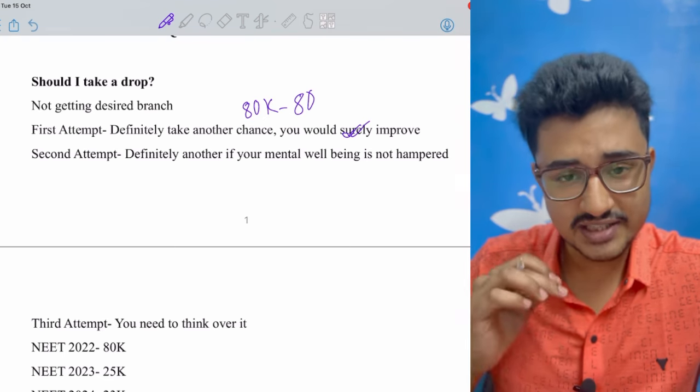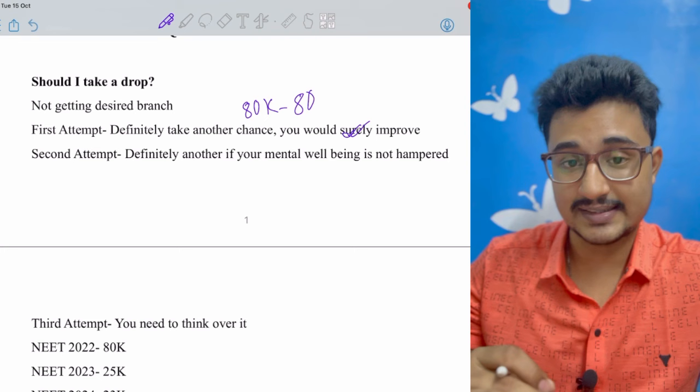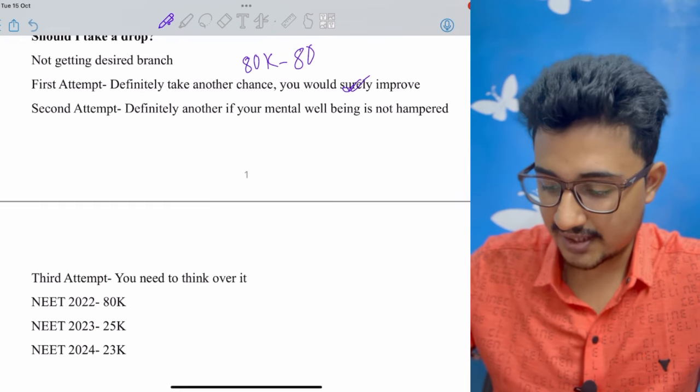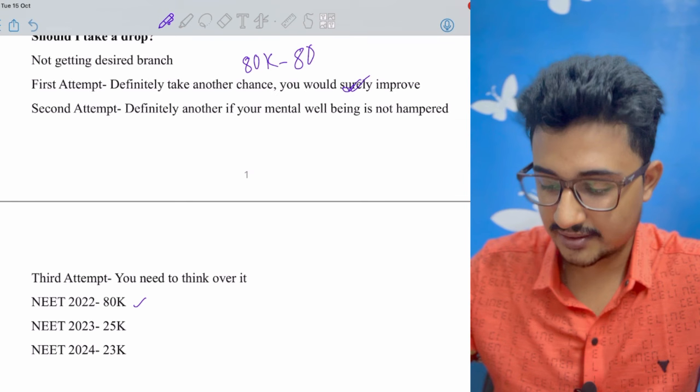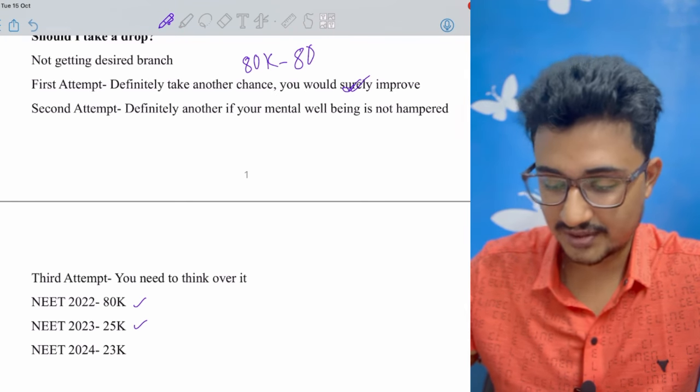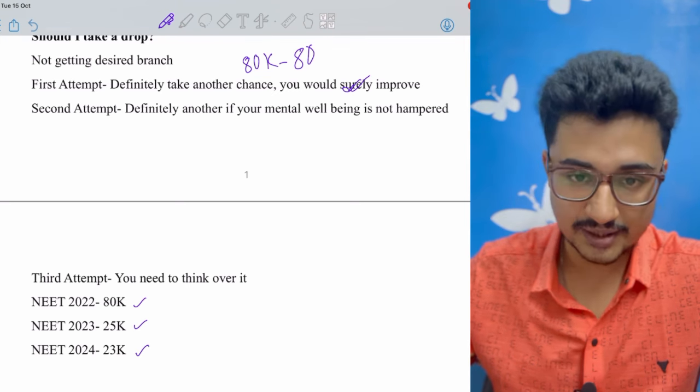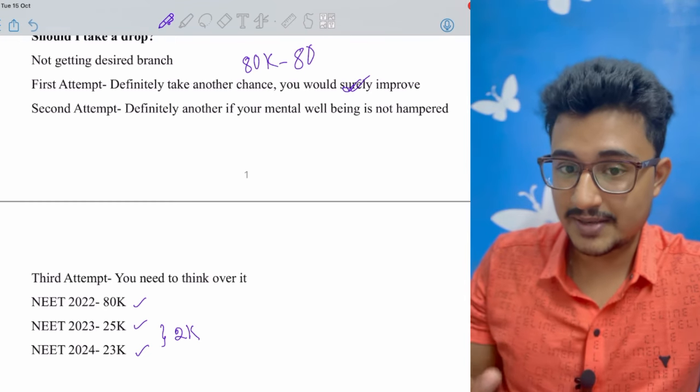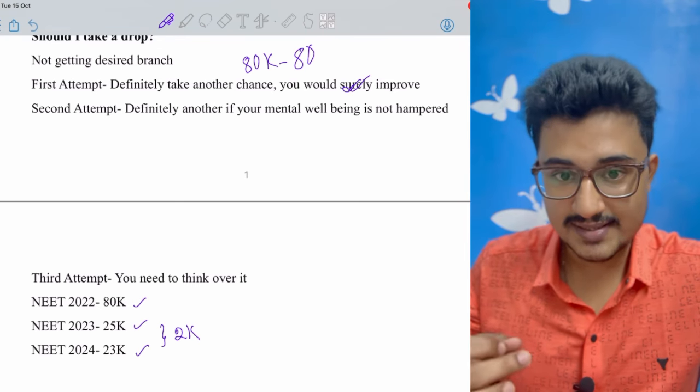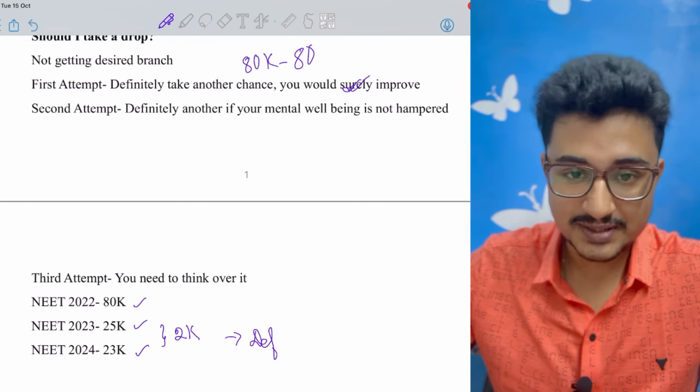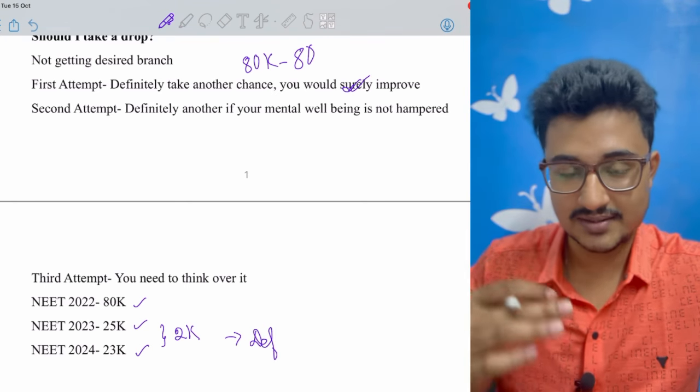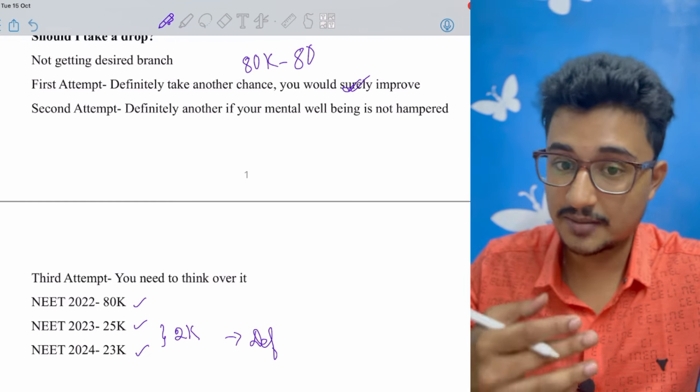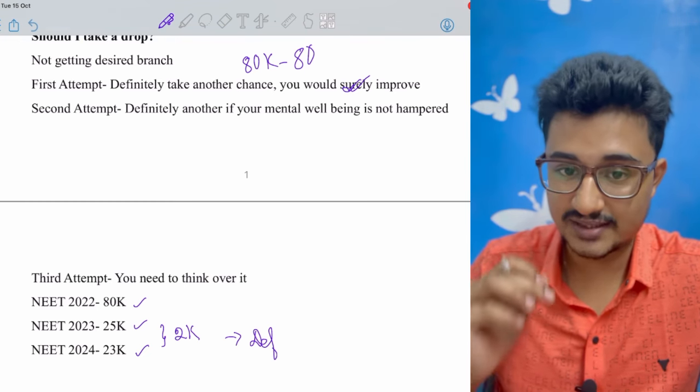If it is your third attempt, it is better that rather than giving drop you take a seat in one of the good clinical streams or any good streams. For example, if in 2022 your rank was 80,000, then 2023 there is massive improvement to 25,000, and this year you have a rank of 23,000 - so here there is only an improvement of 2000. In some cases there can be less improvement also or maybe poorer rank compared to 2023. In these scenarios you should definitely take a seat. Maybe this is your ceiling limit, you can't give better shot than this, and after this competition is increasing. So this time you should definitely take a seat.